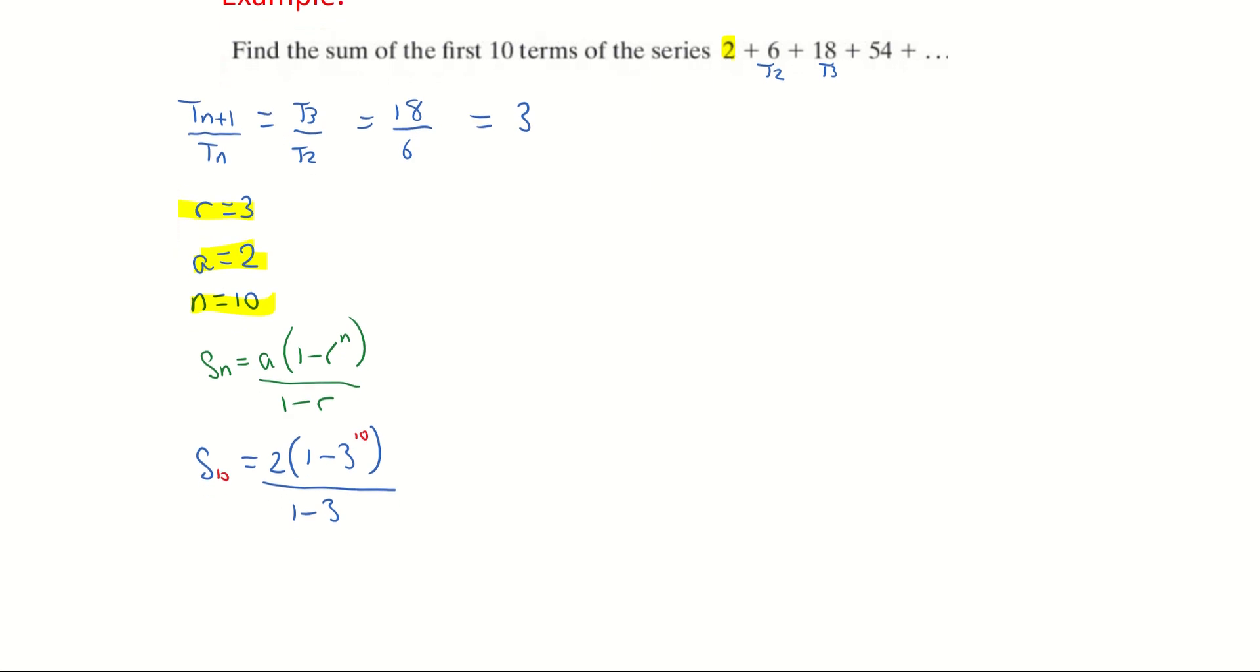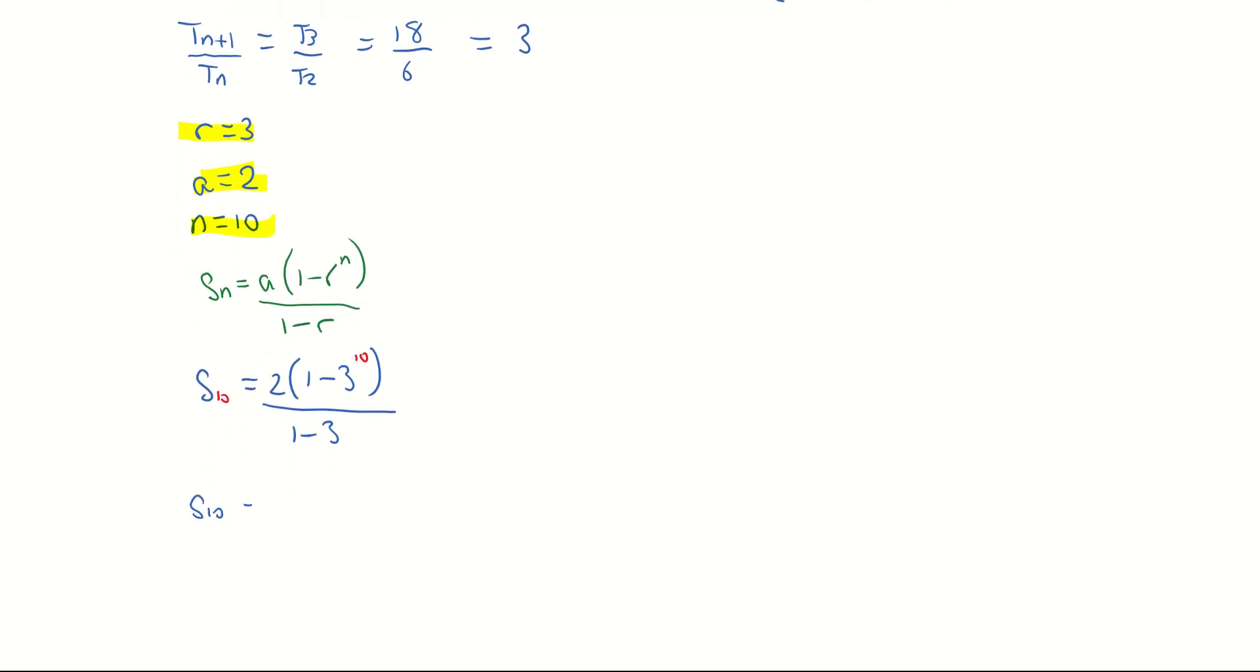I'm going to work all this out now so I'm getting the sum of the first 10 terms is equal to 2 times 1 minus 3 to the power of 10, and 3 to the power of 10 is quite a large number here.